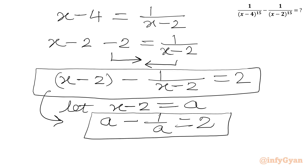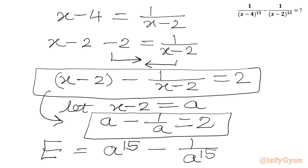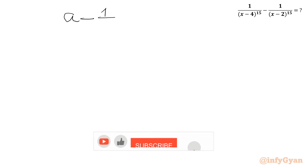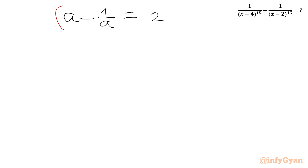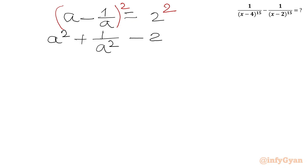Our required expression becomes E equal to A to the power 15 minus 1 over A to the power 15. Now the problem is looking simple. Let us square both sides of A minus 1 over A equal to 2. Applying the (A minus B) whole square formula, we get A squared plus 1 over A squared minus 2 times A times 1 over A equals 4. The middle term cancels, so A squared plus 1 over A squared minus 2 equals 4, giving A squared plus 1 over A squared equal to 6.